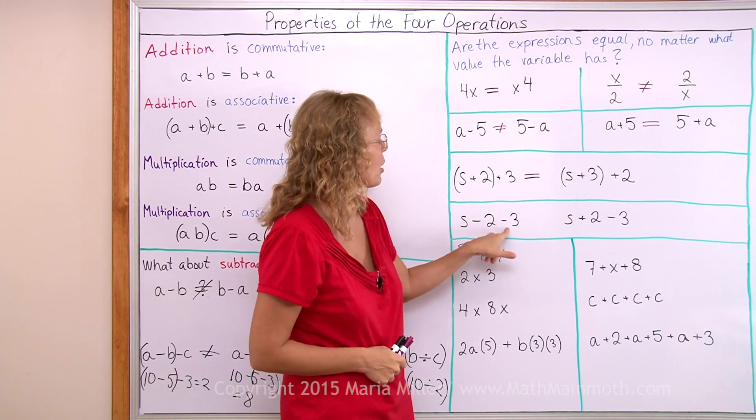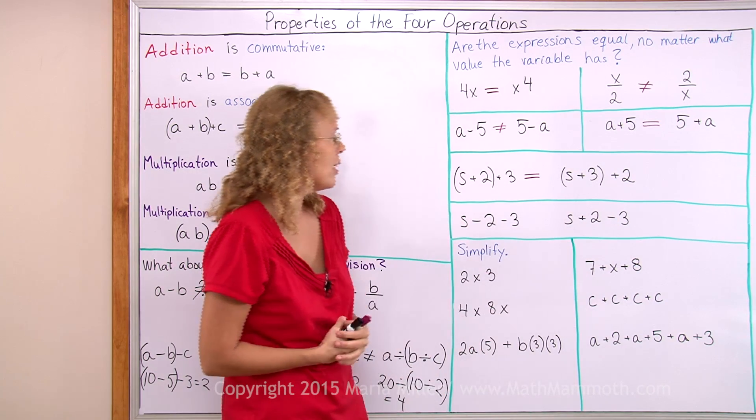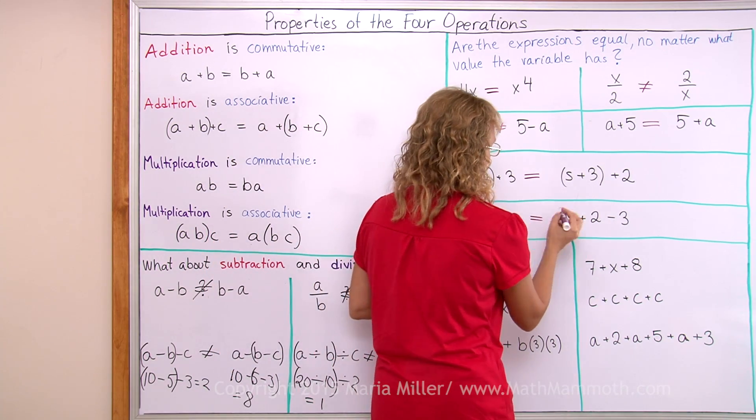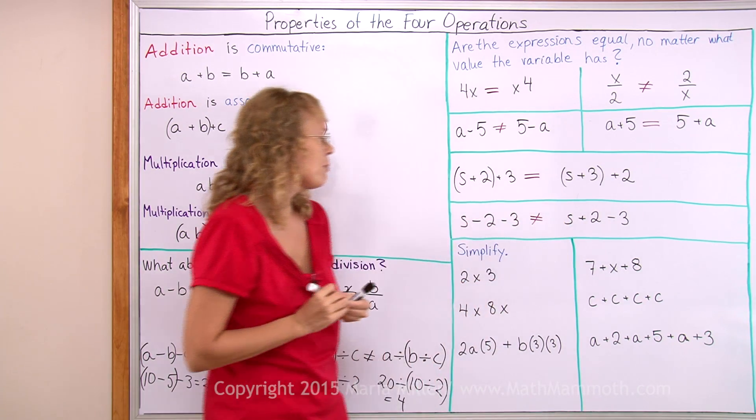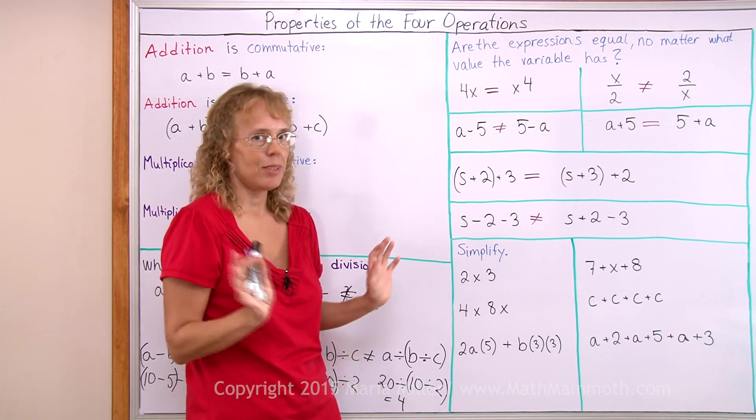How about s minus 2 minus 3 and s plus 2 minus 3? They don't look the same and they are not equal always. You can prove it again by choosing some number for s, like s is 10 and checking they are not the same.